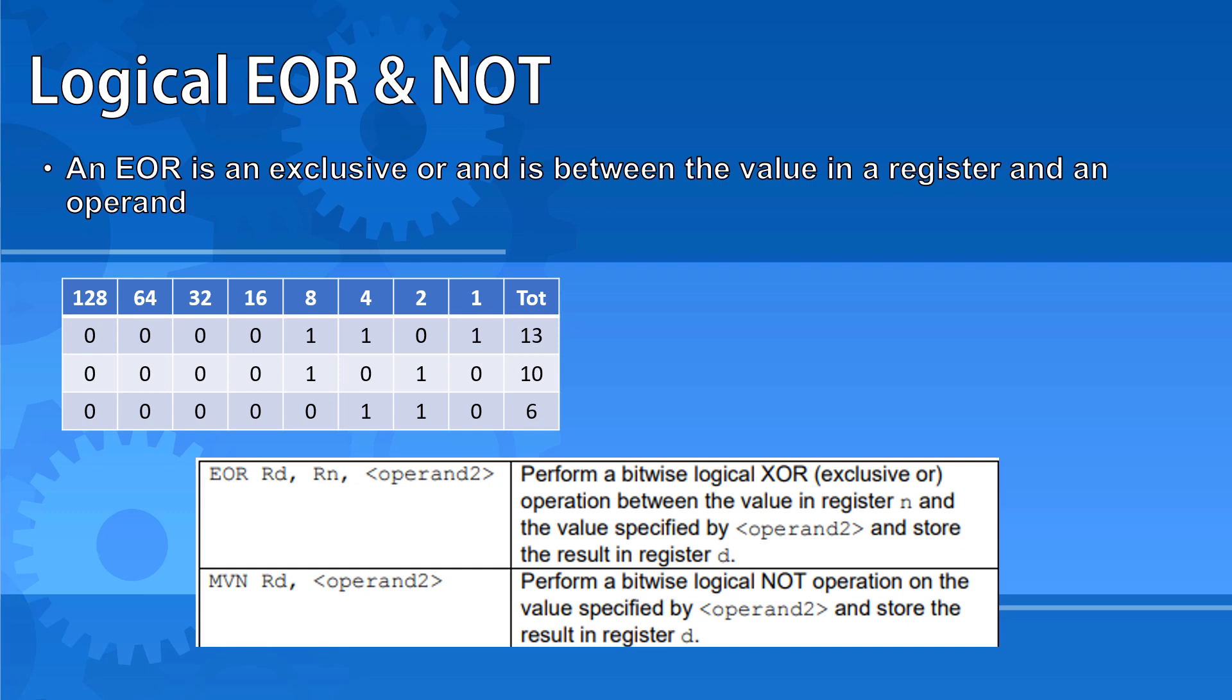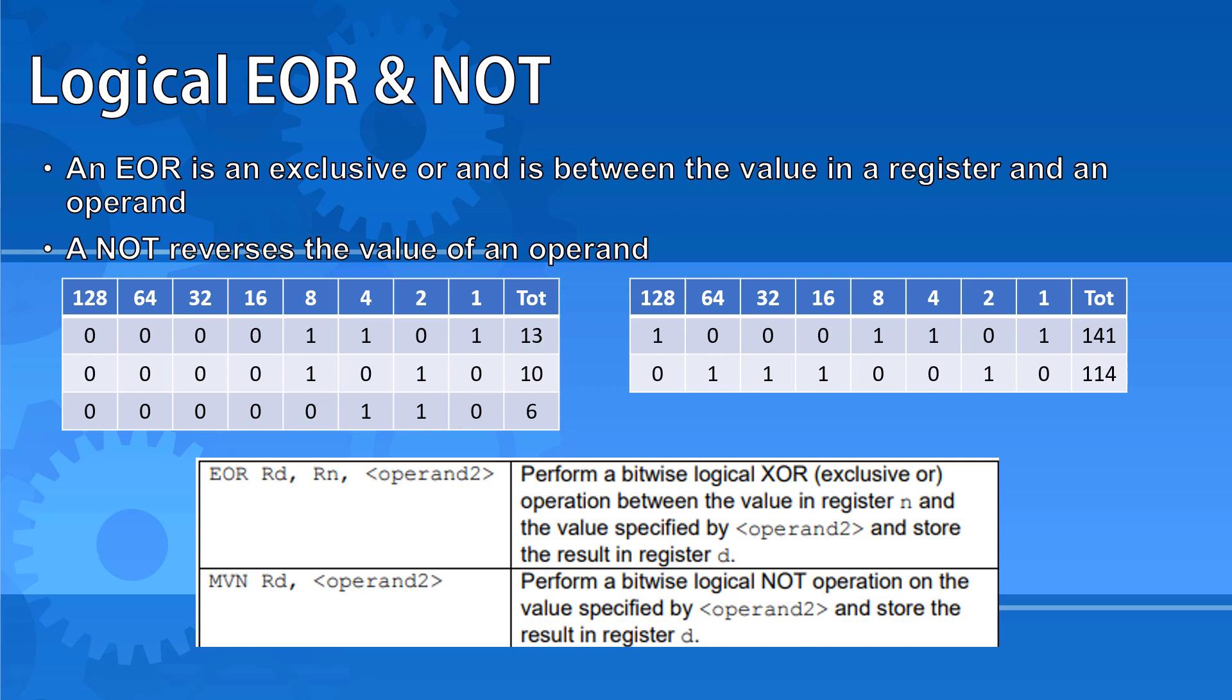The NOT command uses the mnemonic MVN. It receives a value either from a register or directly with a hash tag. It then reverses the 1s and 0s in this value and stores it in the specified register.